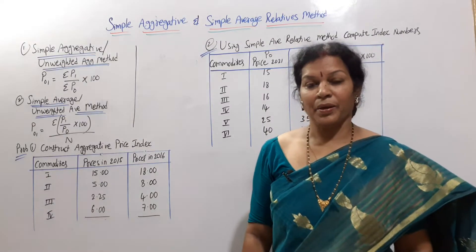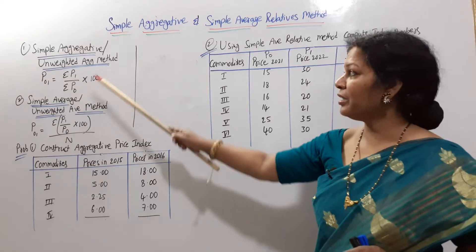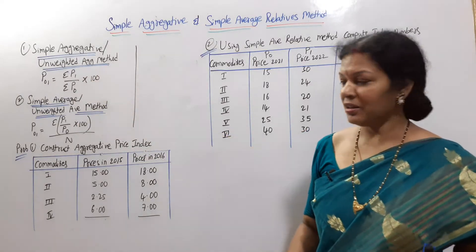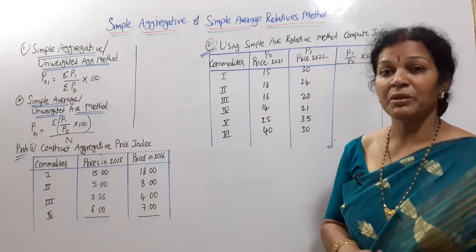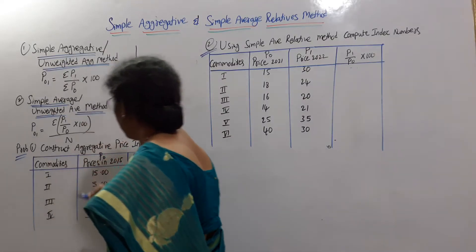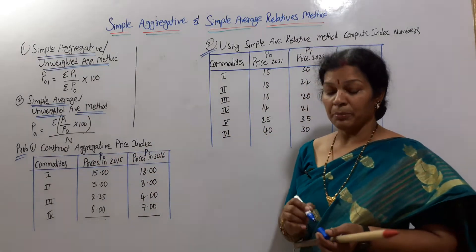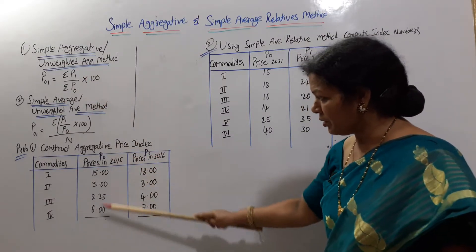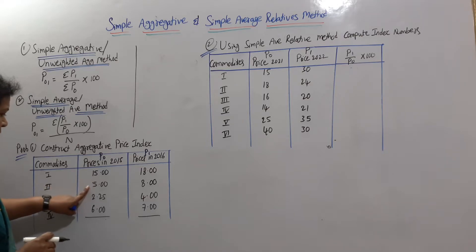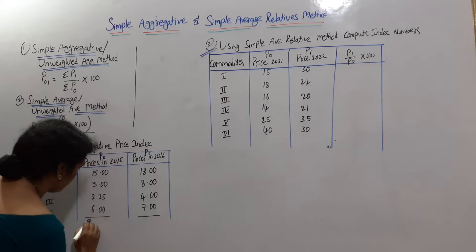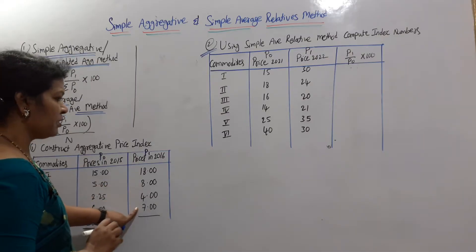In the problem, we have clarity. Construct the aggregative price method. The aggregative method uses P1 by P0 into 100. We have commodities with prices in 2015 and prices in 2016. Prices in 2015 is the base year — that is P0. Prices in 2016 is the current year — that is P1. The problem requires sigma P1 and sigma P0. We total these two columns. The total is 15, 5.20, 26, 28.25. The total for P0 is 28.25 and for P1 is 26, 36, 37.